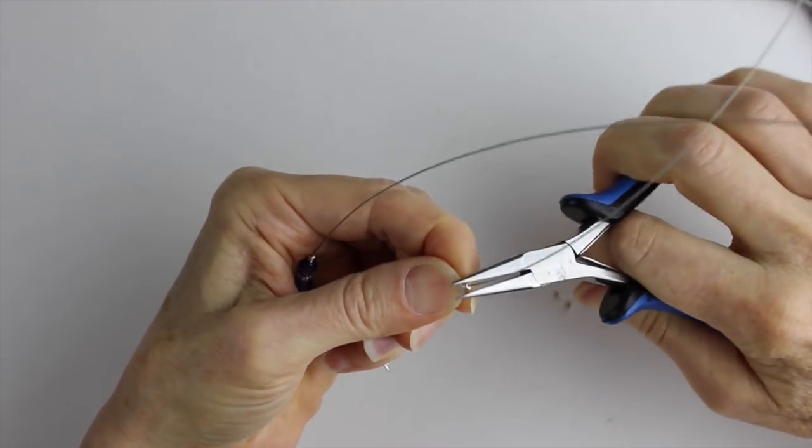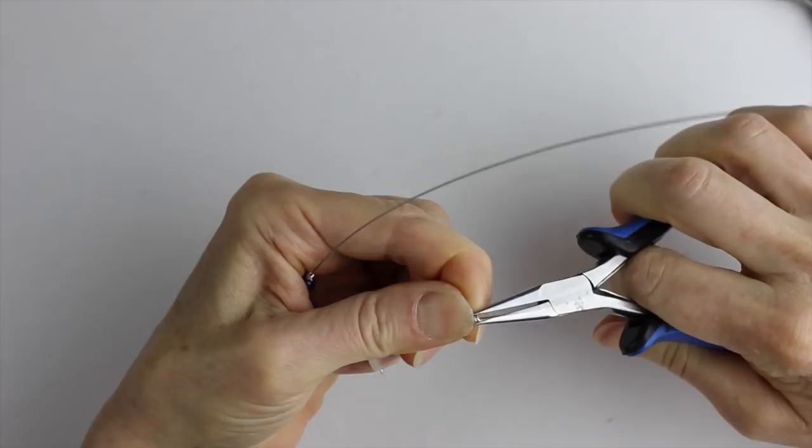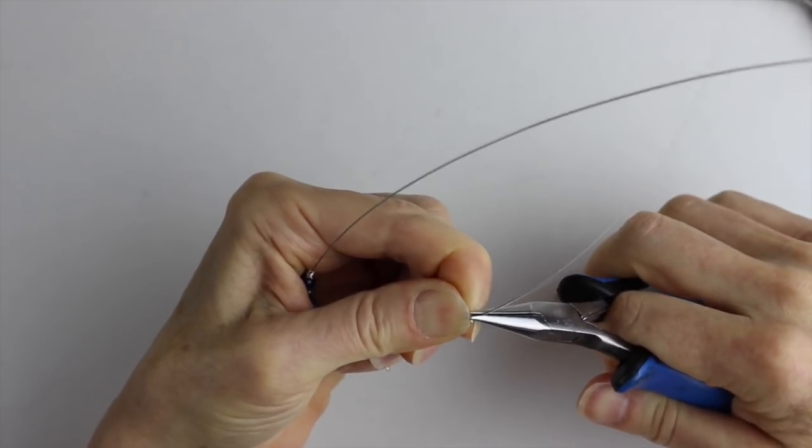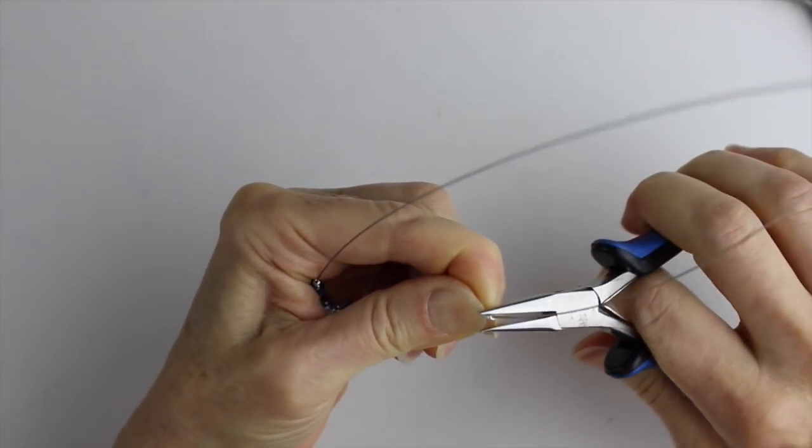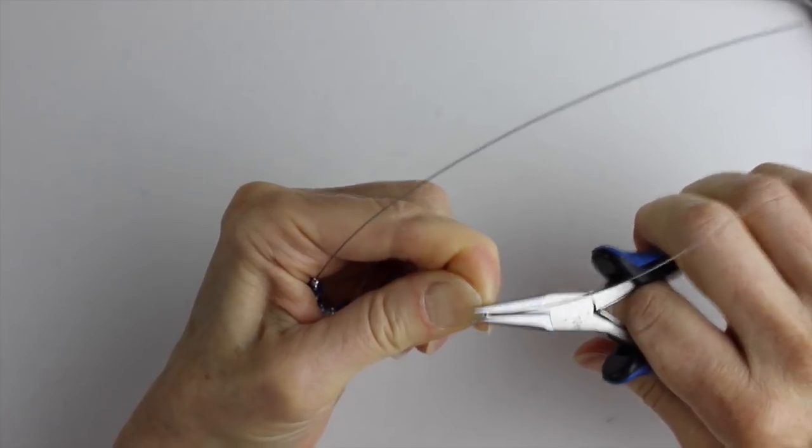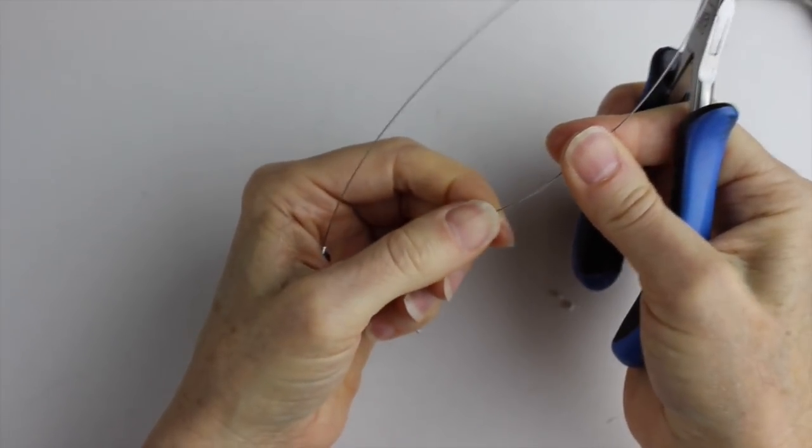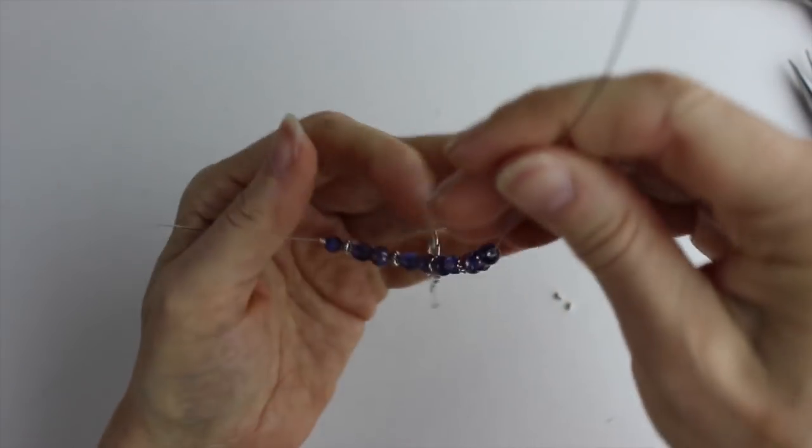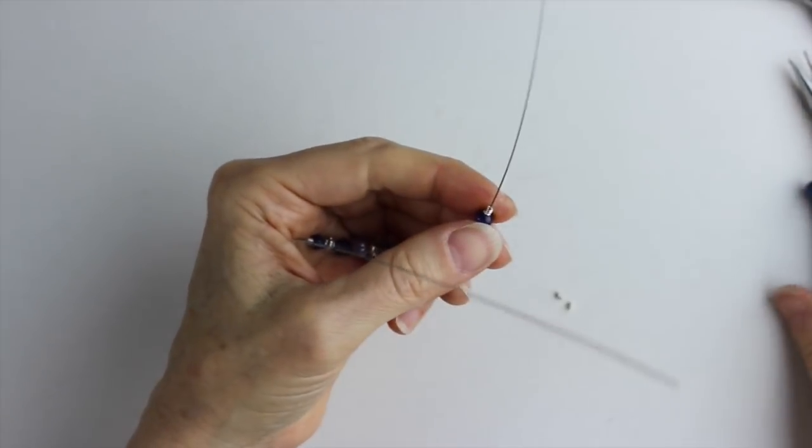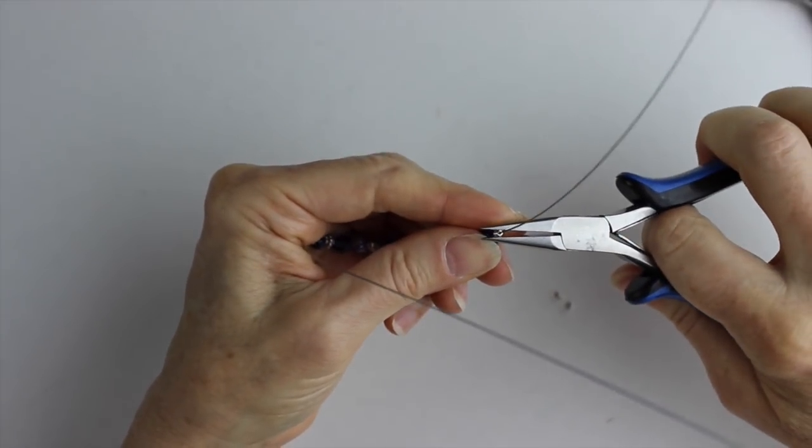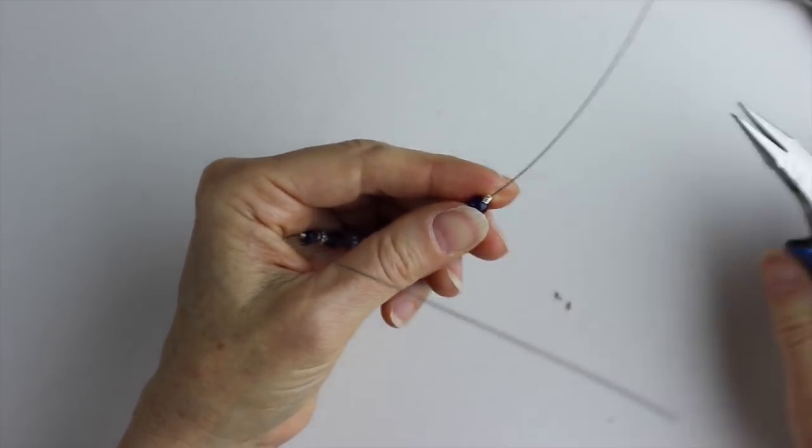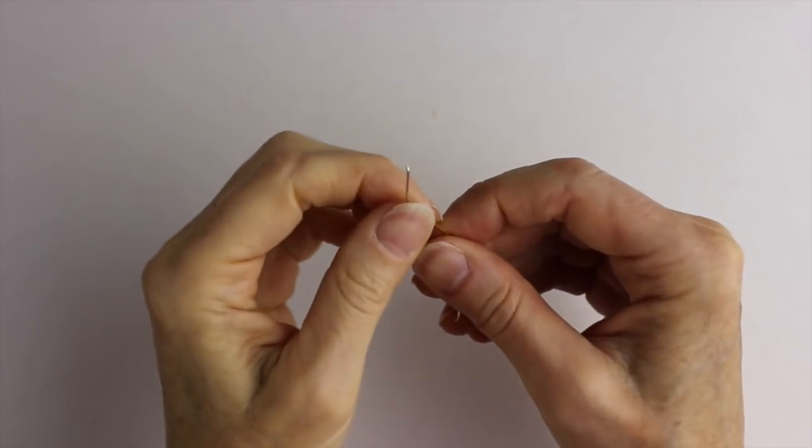Then you're going to simply just pinch the little end there. Find out where it needs to be and give it a little pinch. You really want to just pinch the end of the spring and not the whole spring. That's stuck there. Then on the other side you're going to do the same and just pinch that one little edge there.